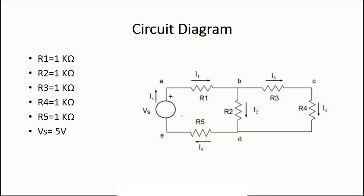This is the circuit diagram that we are going to design on the breadboard. It will have a total of 5 resistances termed as R1, R2, R3, R4, and R5. The value of all these 5 resistances will be taken as 1 kilo ohm.